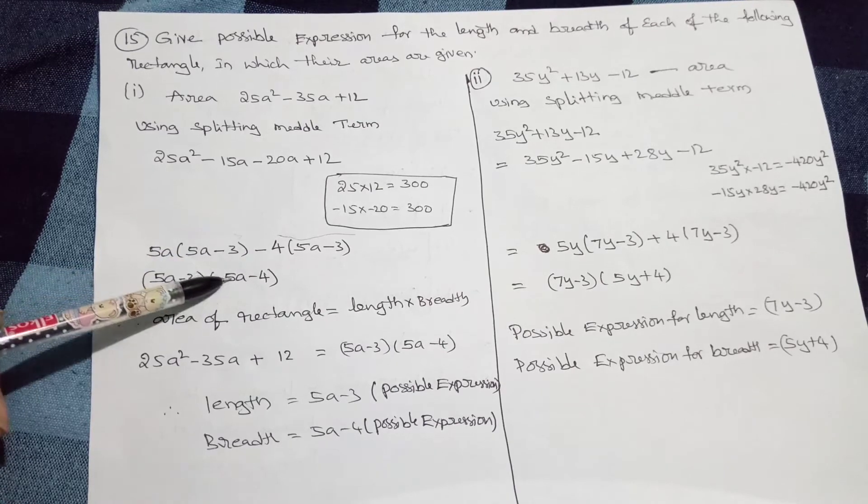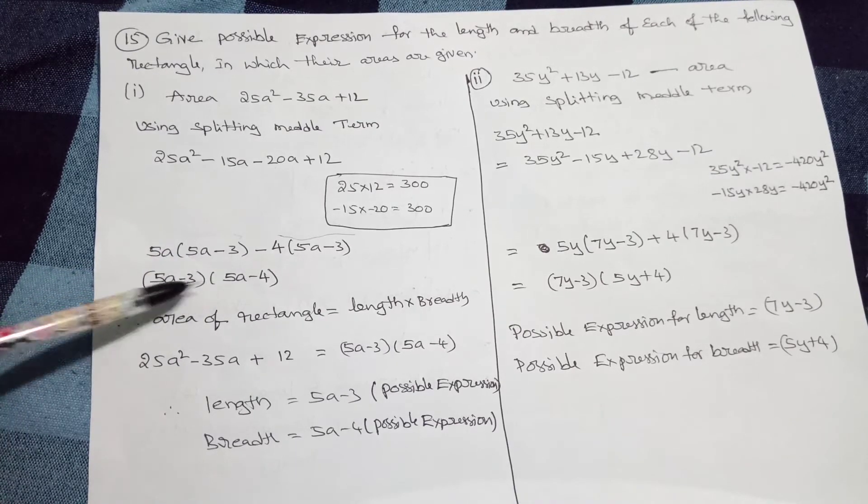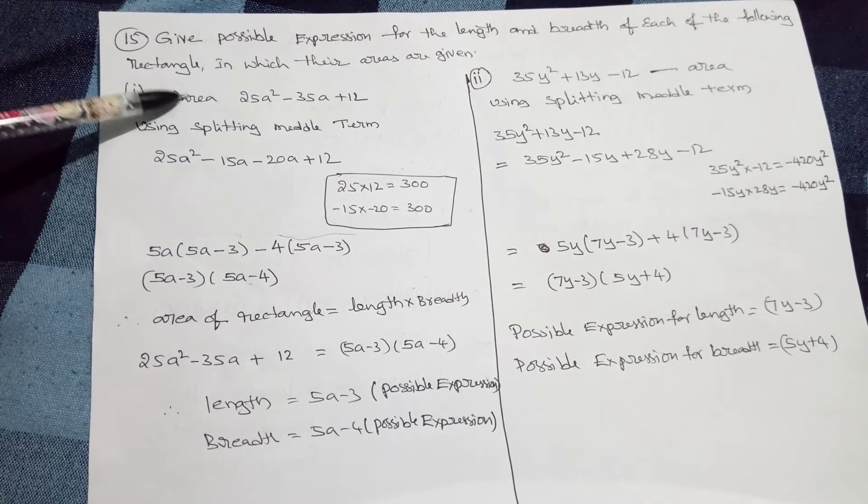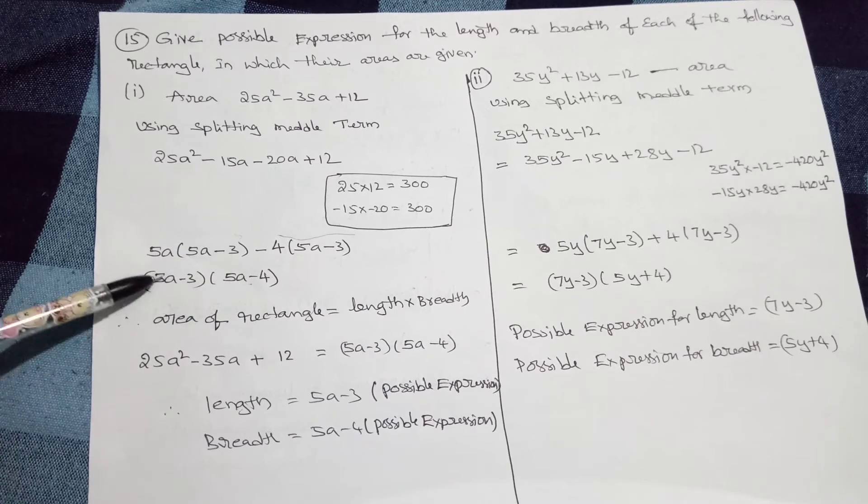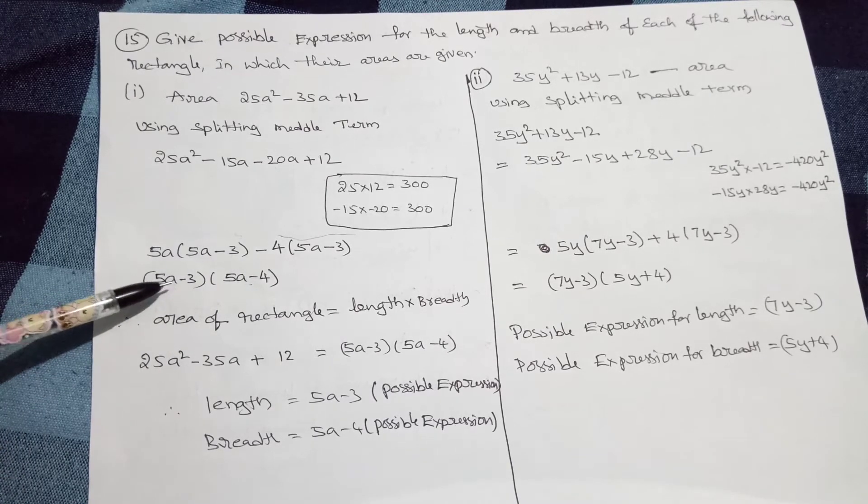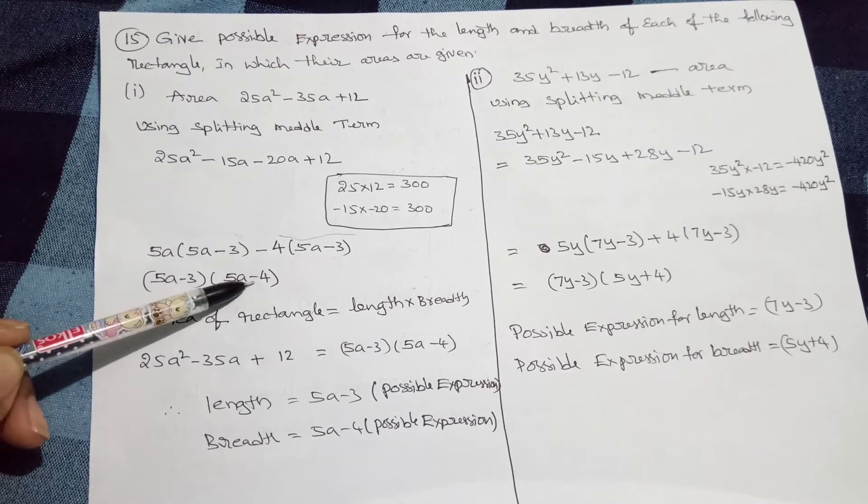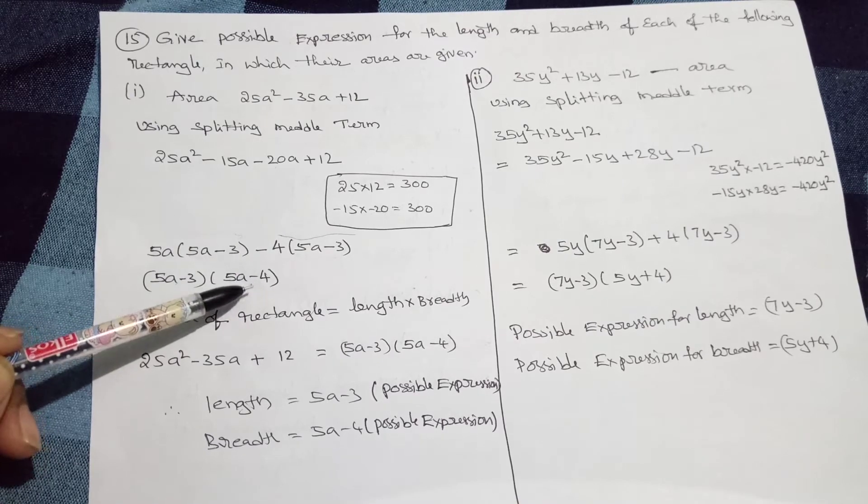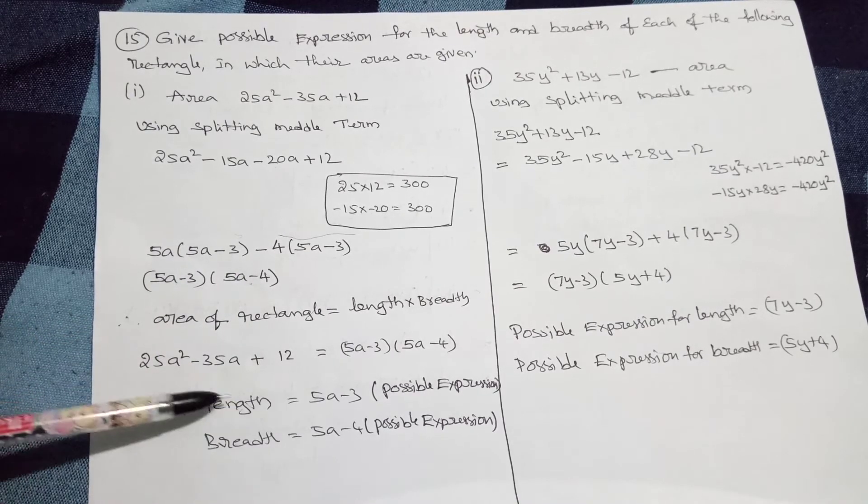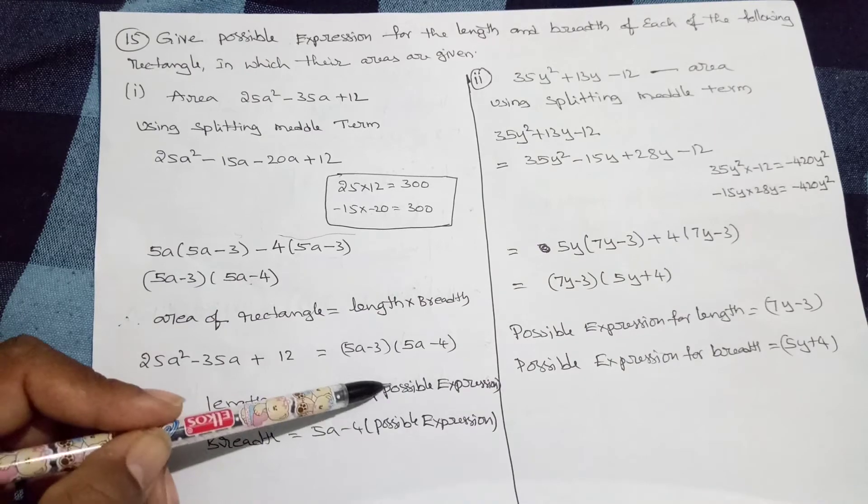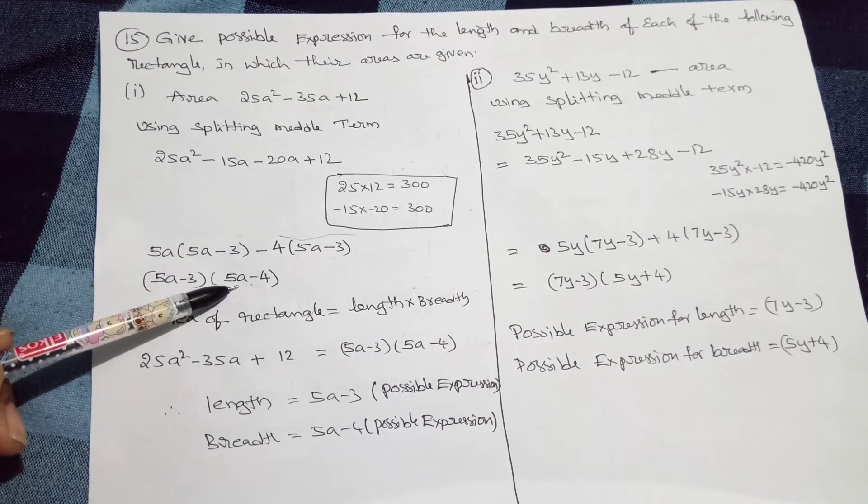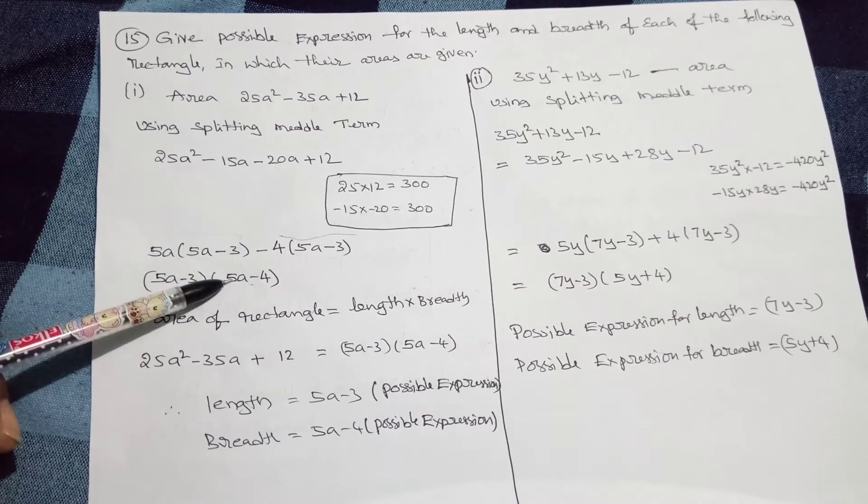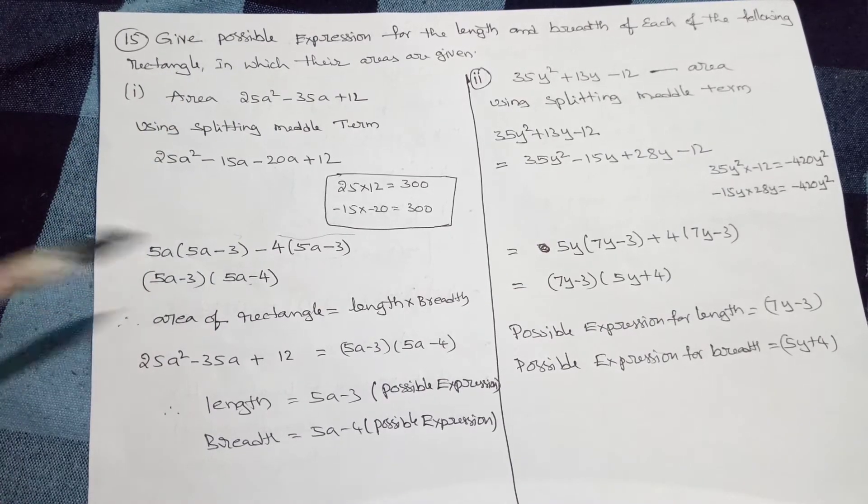Here look like two factors. Of course, there are two factors. So area can be split into two factors. That means length into breadth. So this is the possible length and this is the possible expression for breadth. That's what I have written. 5a - 3, the possible expression for length, and this is breadth. Length into breadth is equal to area.